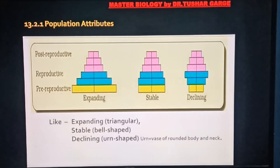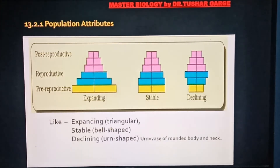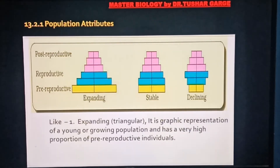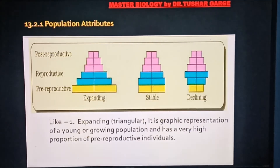तीन तरह के pyramids मिलते हैं: triangular/expanding, bell-shape/stable, और urn-shape/declining। Expanding या triangular pyramid तब बनता है जब एक young या growing population हो जिसमें pre-reproductive age group का number highest और post-reproductive का least हो। यह population लगातार बढ़ती रहती है और एक well-flourishing population को signify करता है।